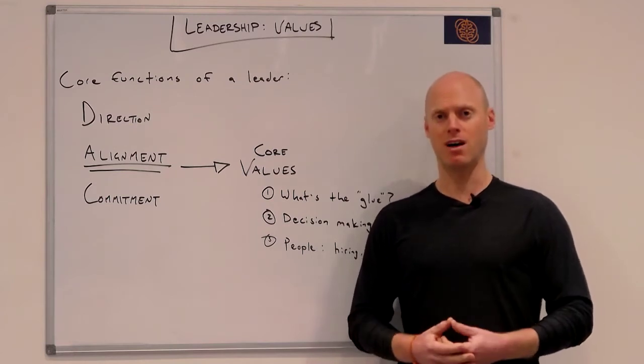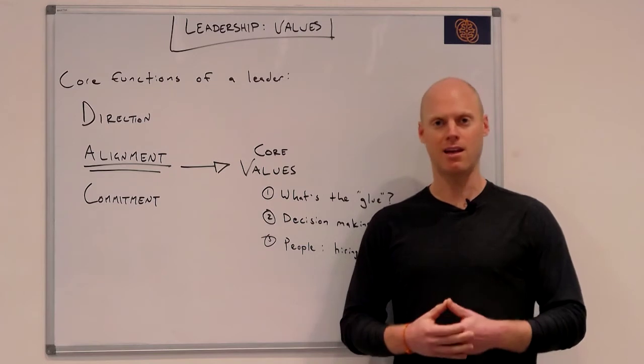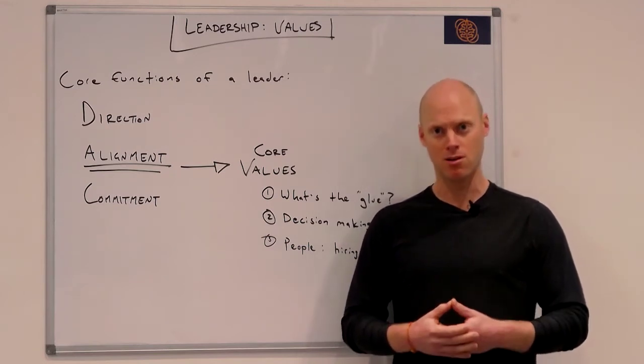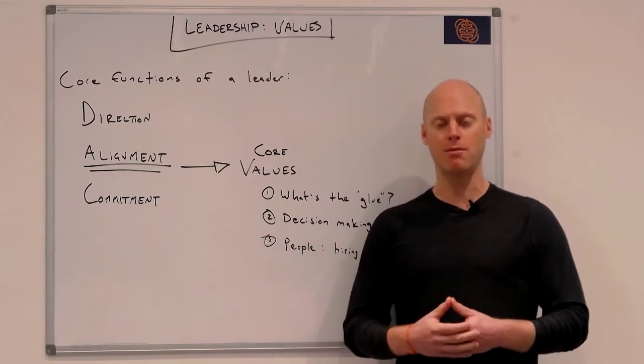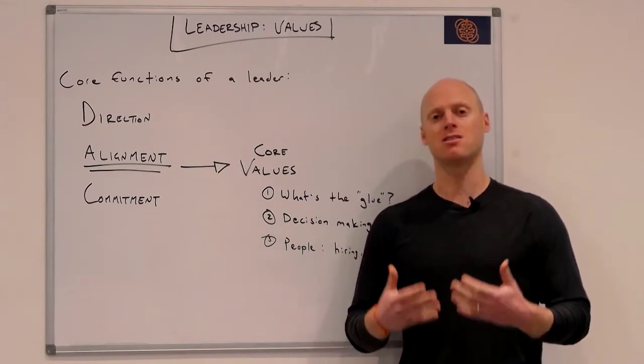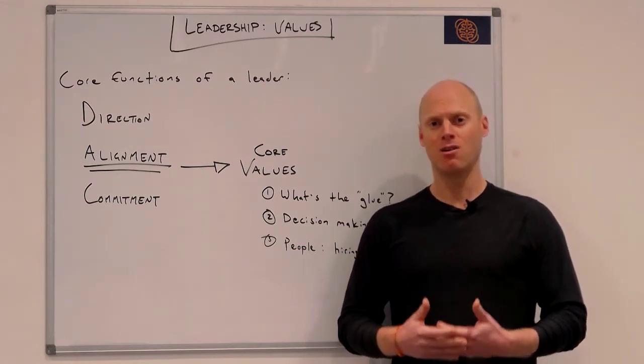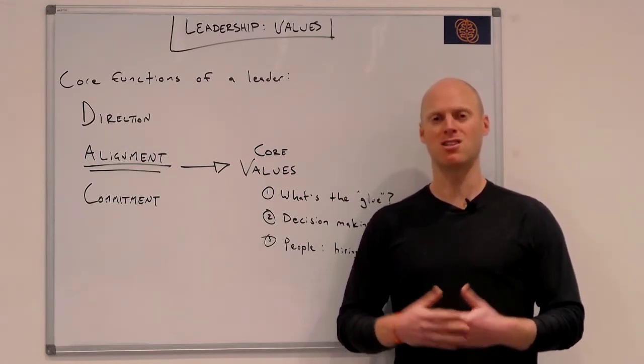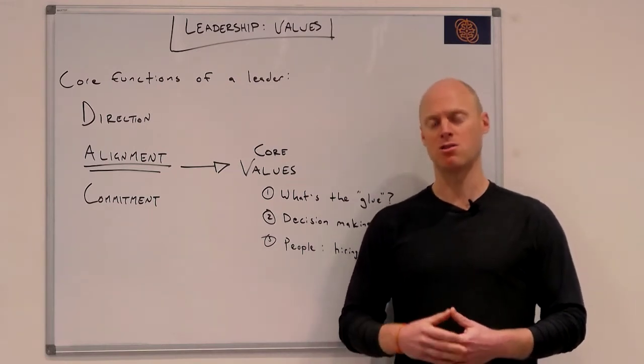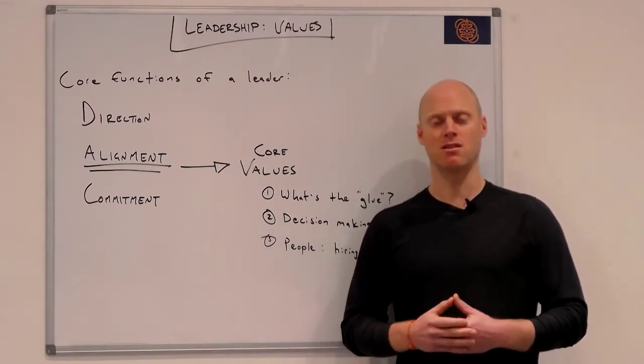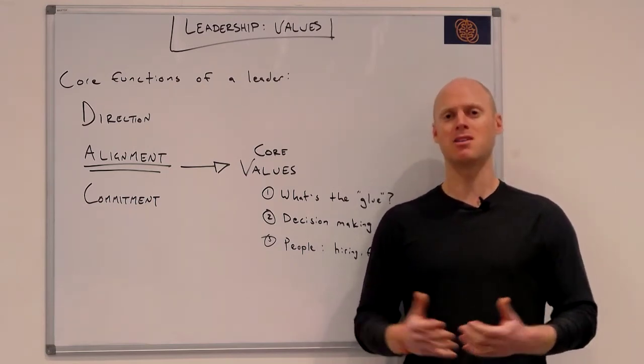We also really value transparency, which means we want to have candid conversations that can be difficult. When we do have those difficult conversations, we want to be able to pivot back and discuss our core value of transparency. If we don't all value that, we can think those difficult conversations are harsh or someone's being mean. But when we can point to our values and talk about we're having this conversation because we believe in transparency, that makes it a lot more objective.